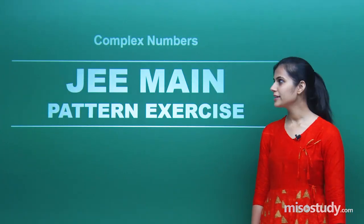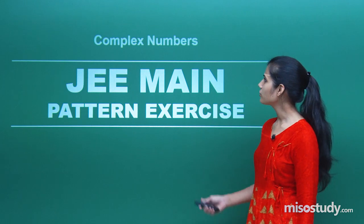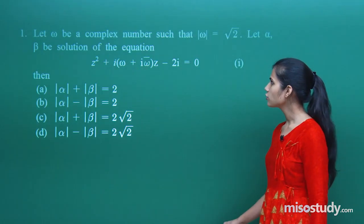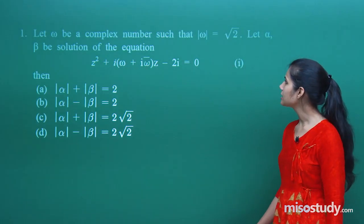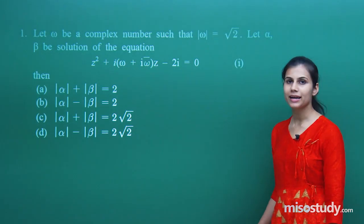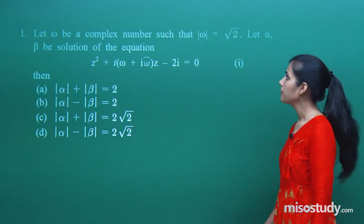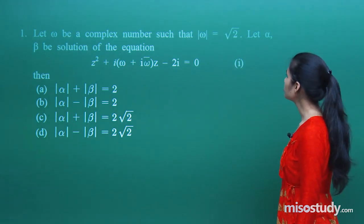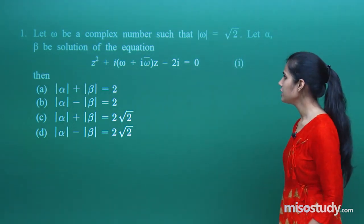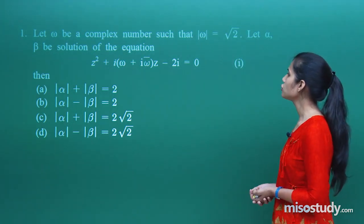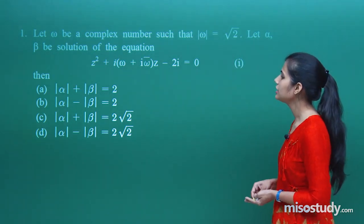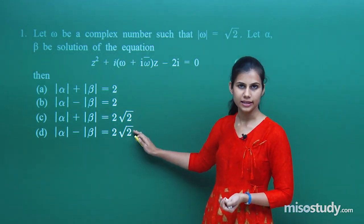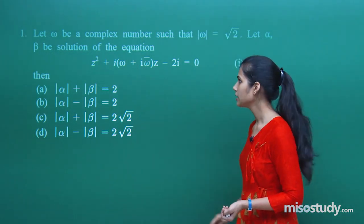Hello guys! Let us begin the discussion over the questions. The first question says omega is a complex number such that the modulus of omega is given to be root 2. Alpha and beta are the solutions of this equation. Then which among the following is the correct answer?